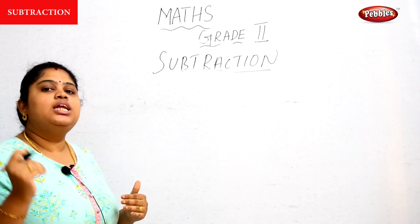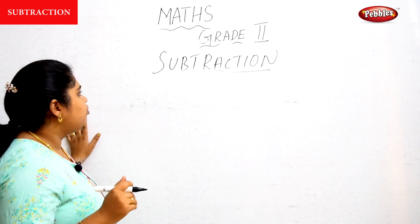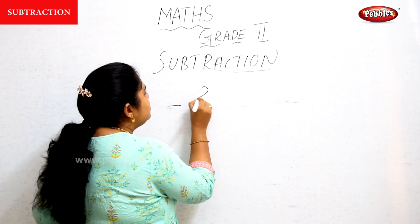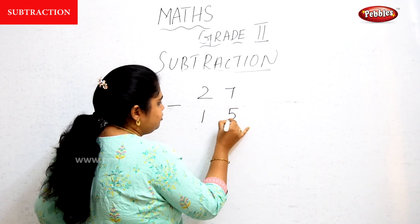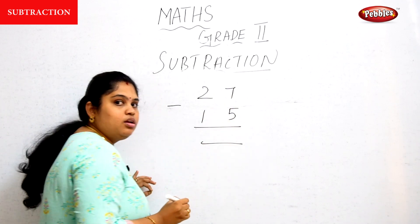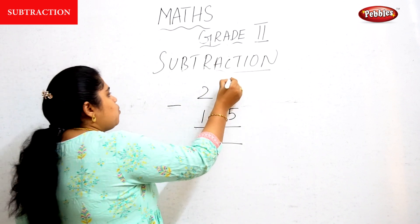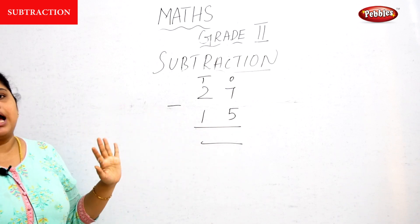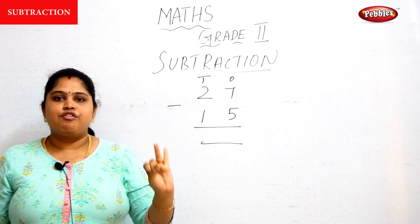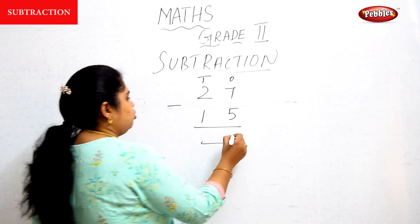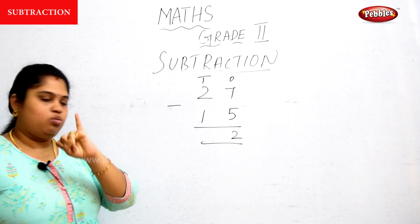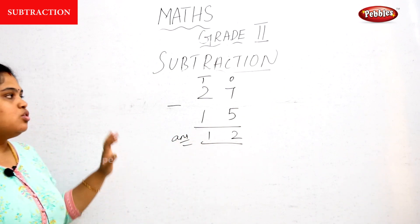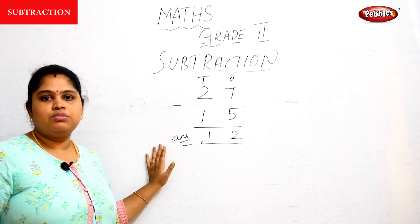We have seen single-digit subtraction. Now we are going to see double-digit subtraction. For example, 27 minus 15. There is a ones column and a tens column. Seven minus five — backward counting: six, five — that gives two. Then two minus one — only one finger — so the answer is 12.